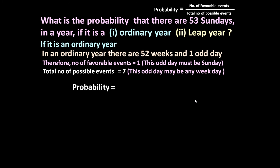So probability is given by one by seven. To summarize: in an ordinary year there are 52 weeks meaning 52 Sundays, plus one odd day. If this odd day is a Sunday there will be 53 Sundays, otherwise only 52. Number of favorable events equals one, and total number of possible events equals seven — so probability equals one by seven.